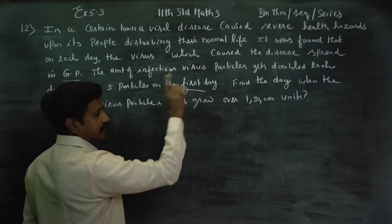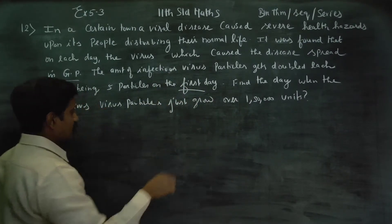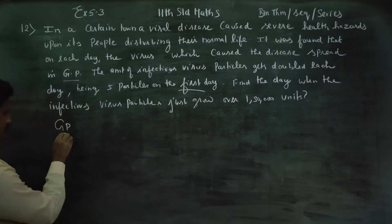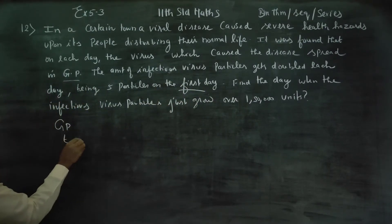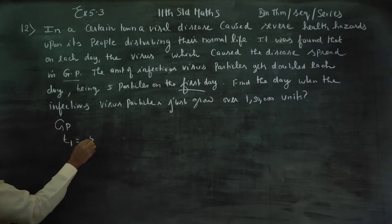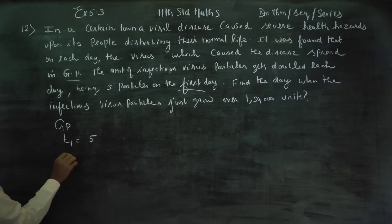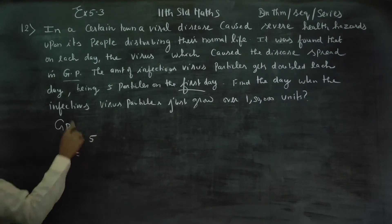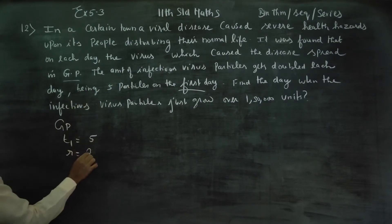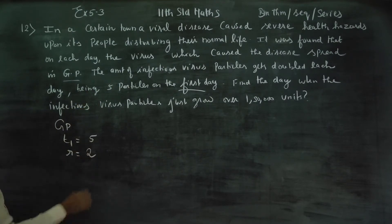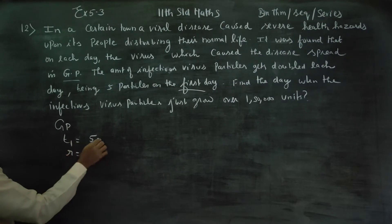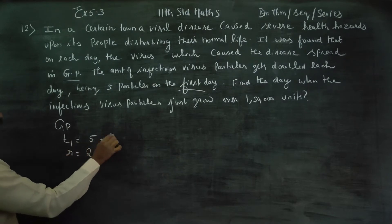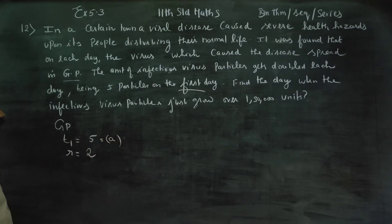It's not zero day, it's the first day. First day means T1. T1 is 5. The common ratio is double, so r equals 2. T1 is term number 1, and A is the first term, so A equals 5.